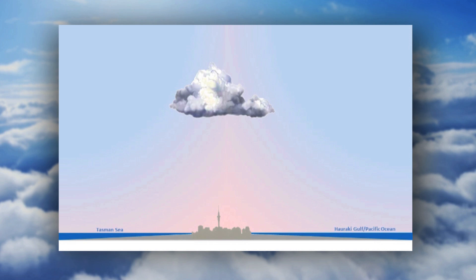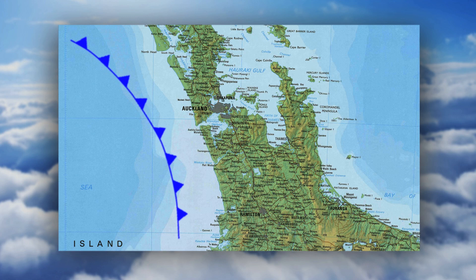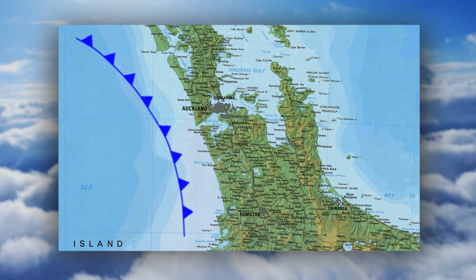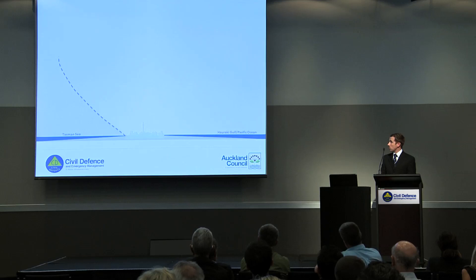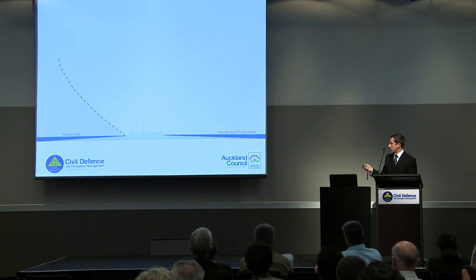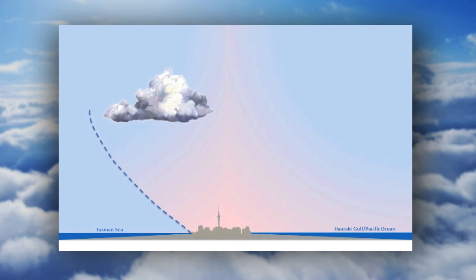The other type of thunderstorms you get in Auckland is where you've got a cold front or a cold air mass moving as part of a low pressure system or any other system coming across Auckland. You've got a mass of cold air that's moving across and again, it's essentially the same process — cold air pushing under a warmer air mass, lifting that air mass up into the atmosphere and creating convection and subsequently thunderstorms.